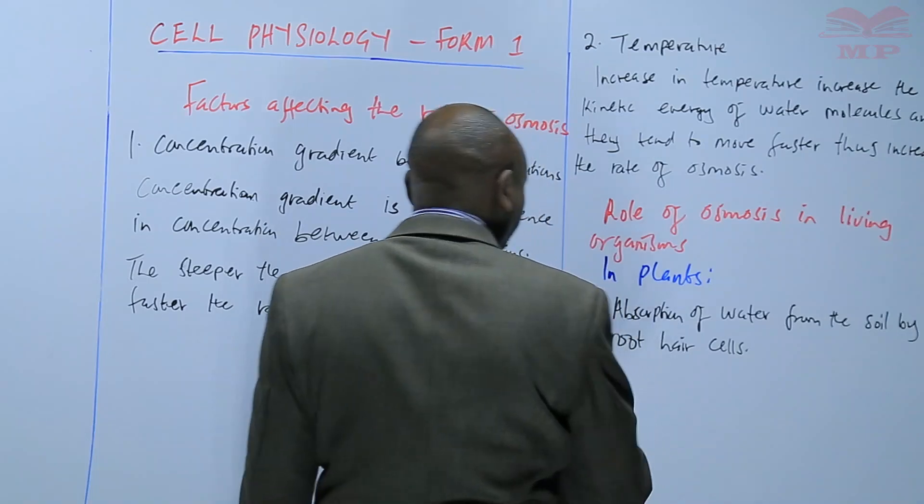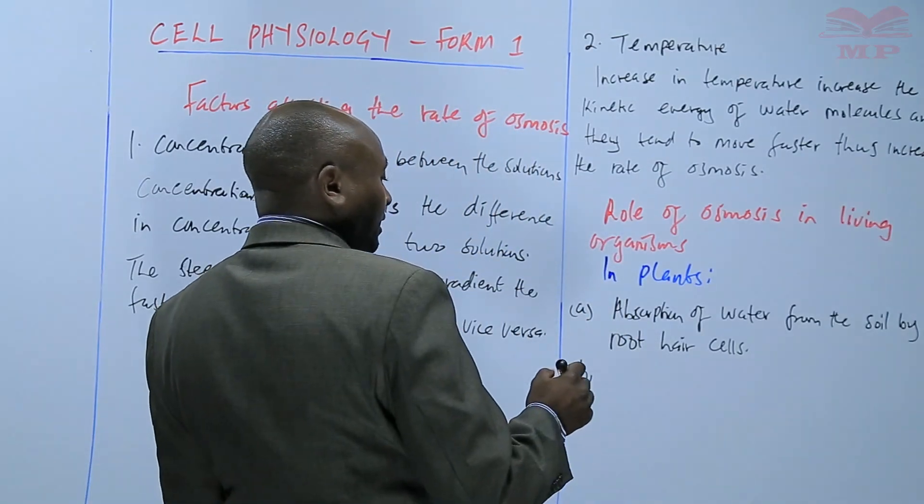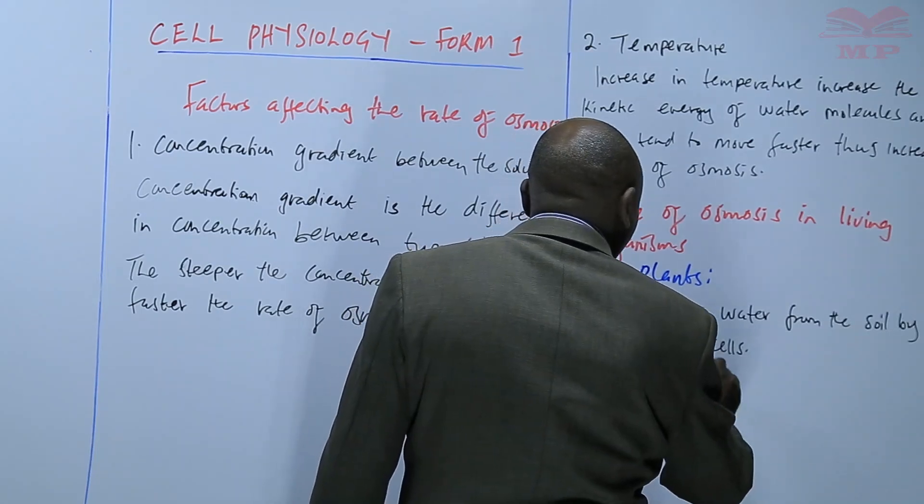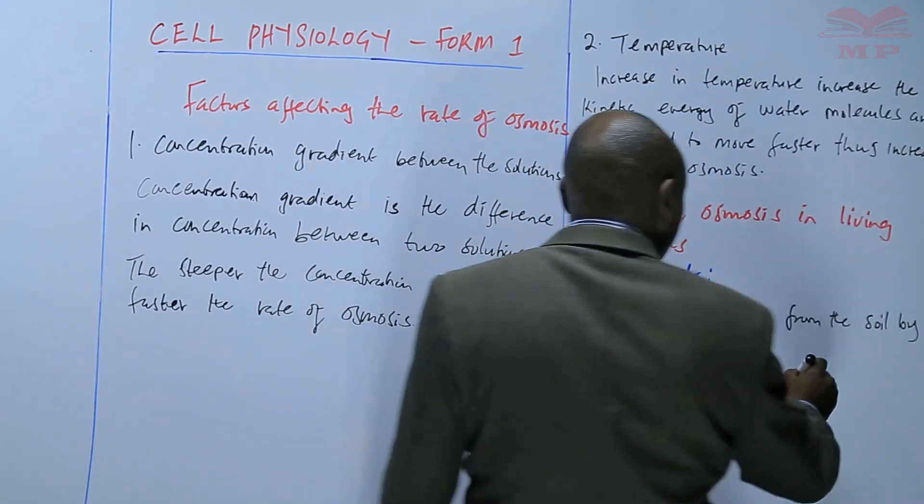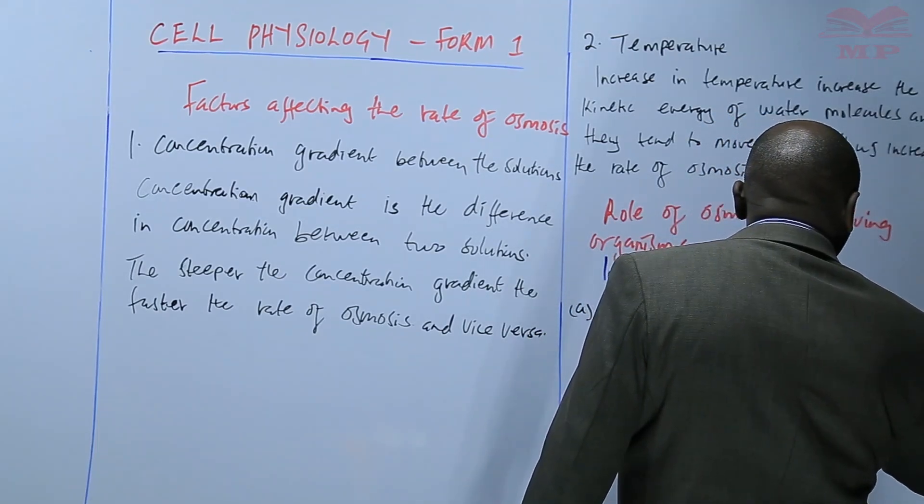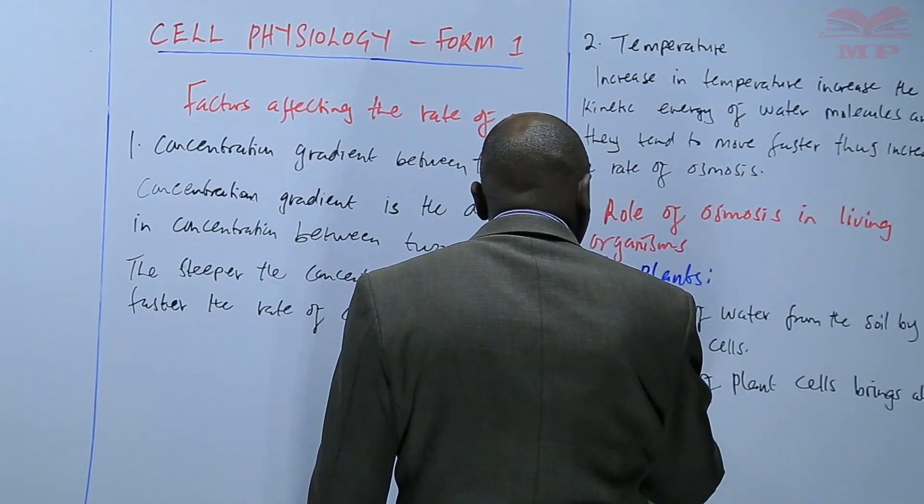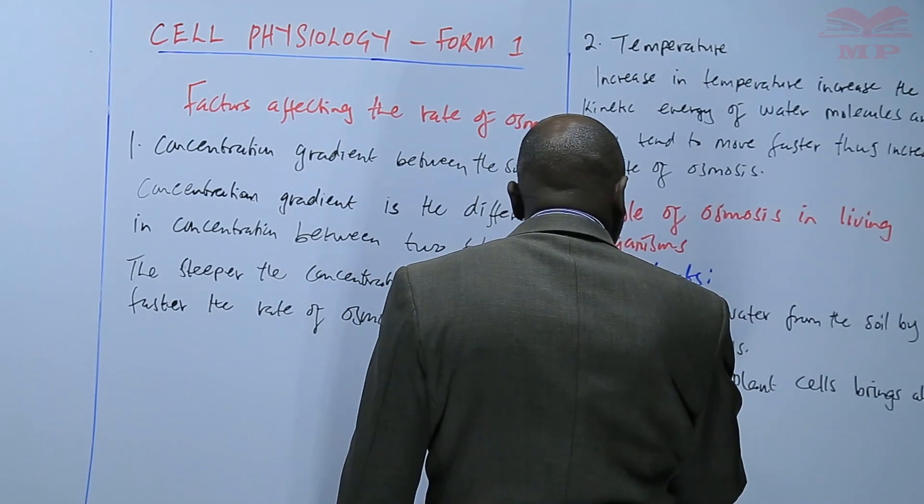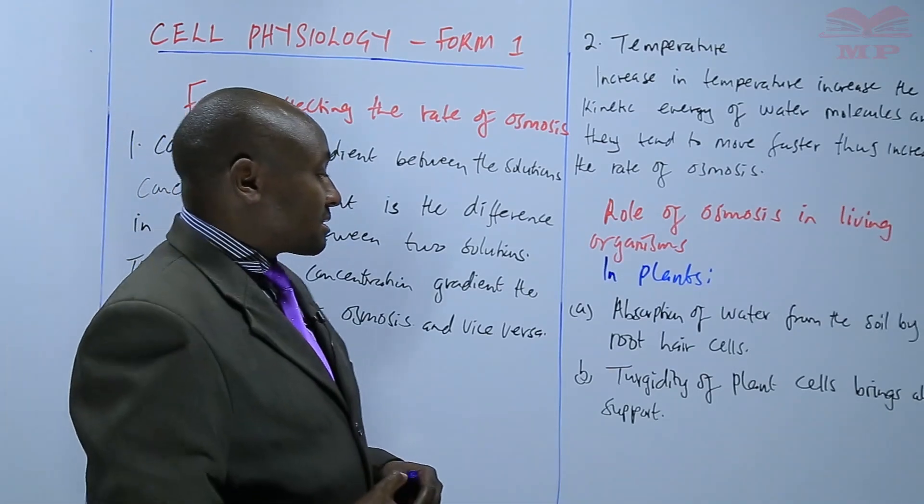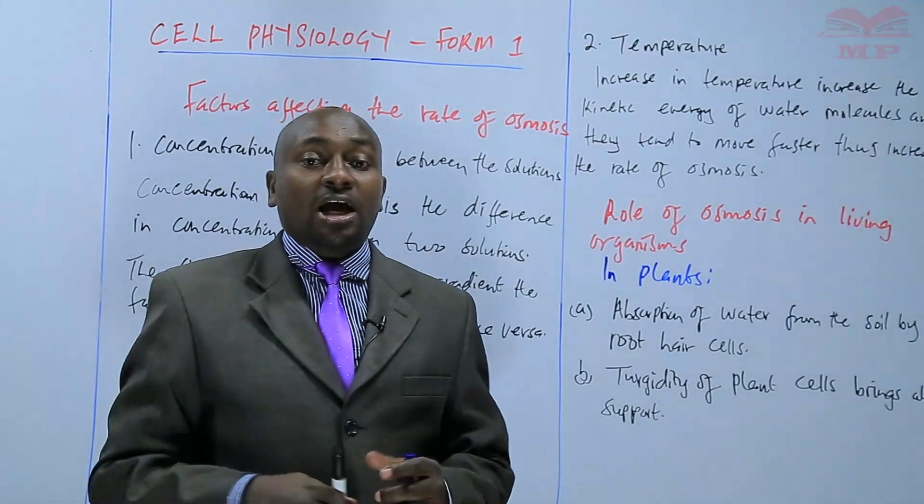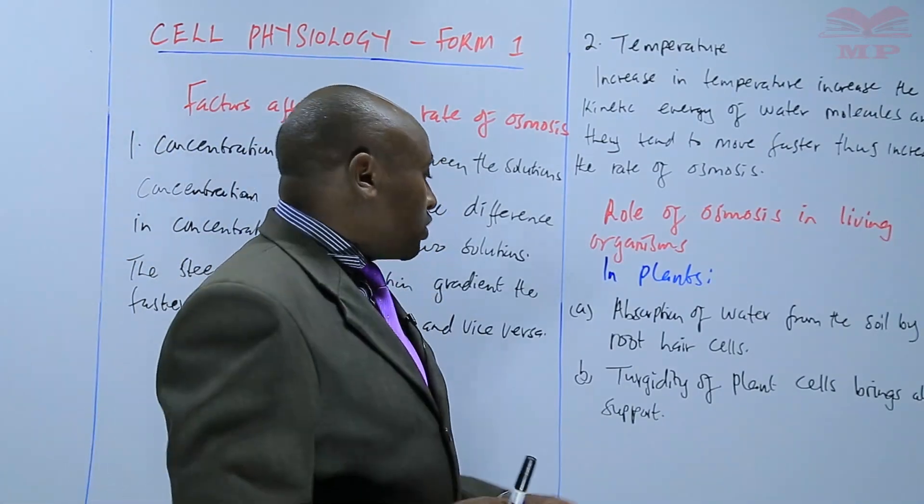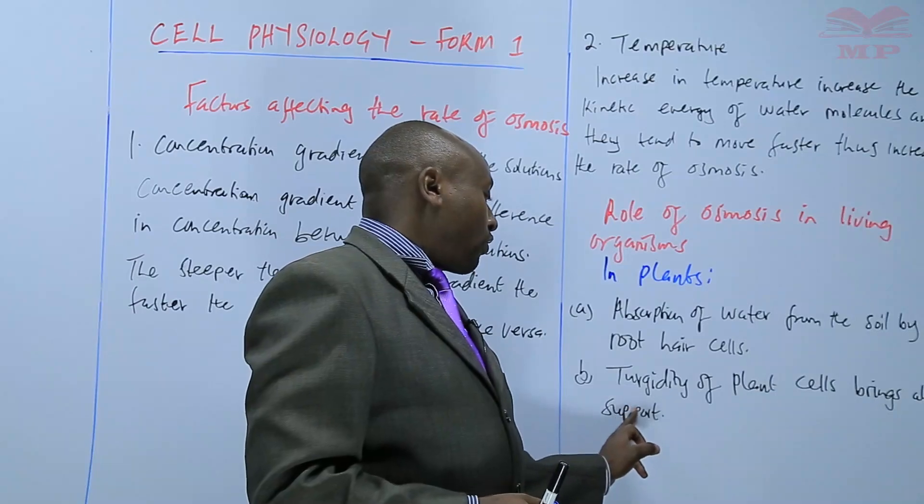Number two. Turgidity of plant cells brings about support. In other words, we are saying that when plant cells gain water by osmosis, their cells become turgid. And when they become turgid, they can maintain an upright posture, which is very important for the support.